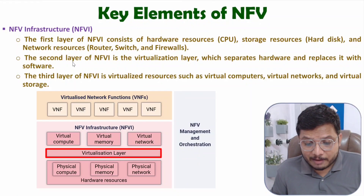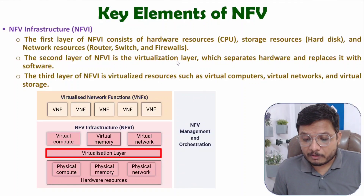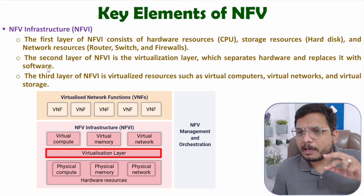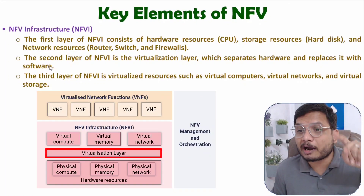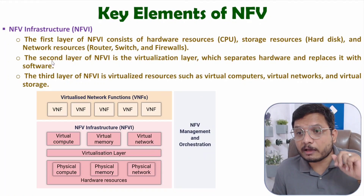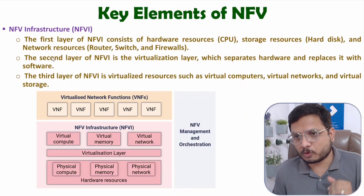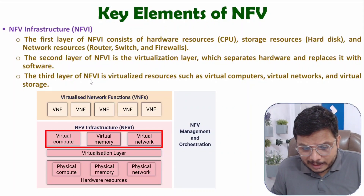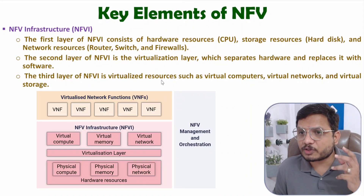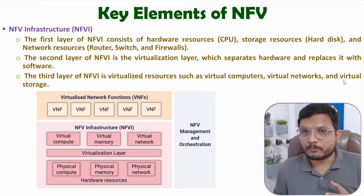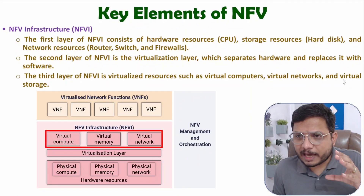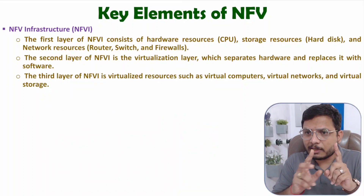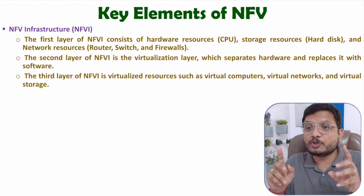The second layer is the virtualization layer, which separates hardware and replaces it with software — it performs virtualization of hardware resources. The third layer of NFVI contains virtualized resources like virtual computers, virtual network, and virtual storage. In summary, NFVI has three layers: the first has hardware, the second provides virtualization, and the third has virtual resources.